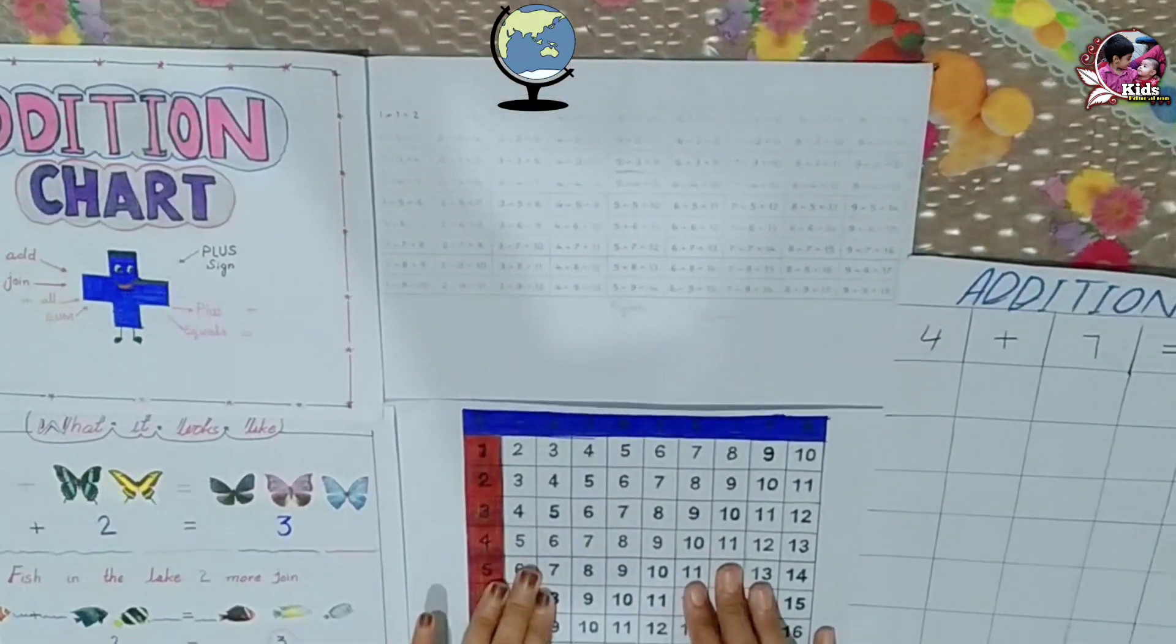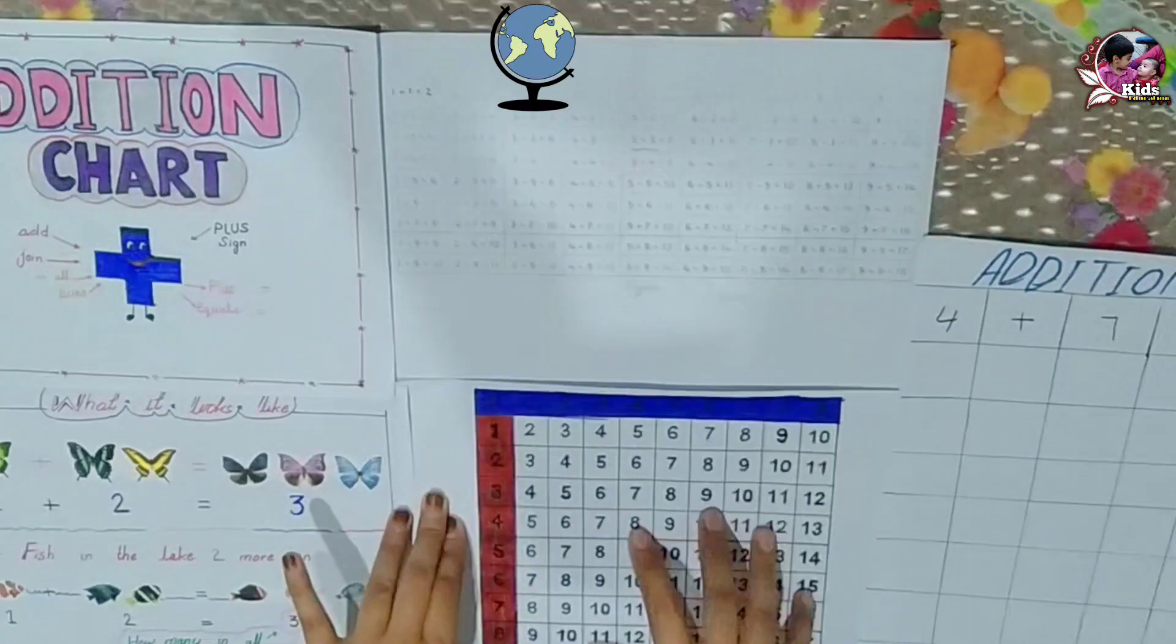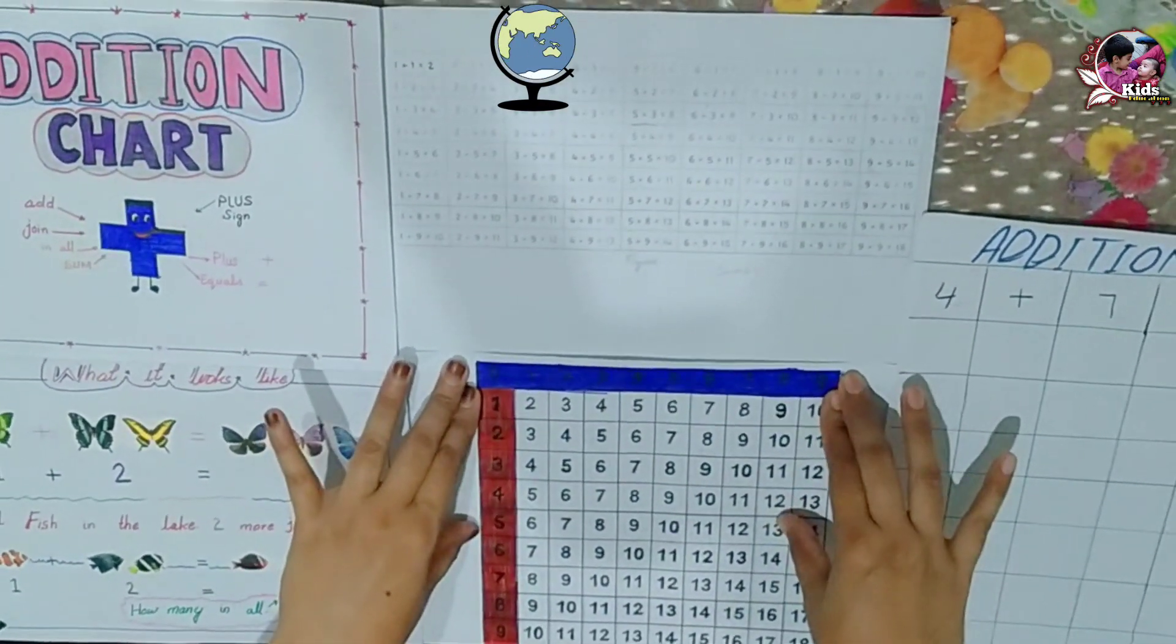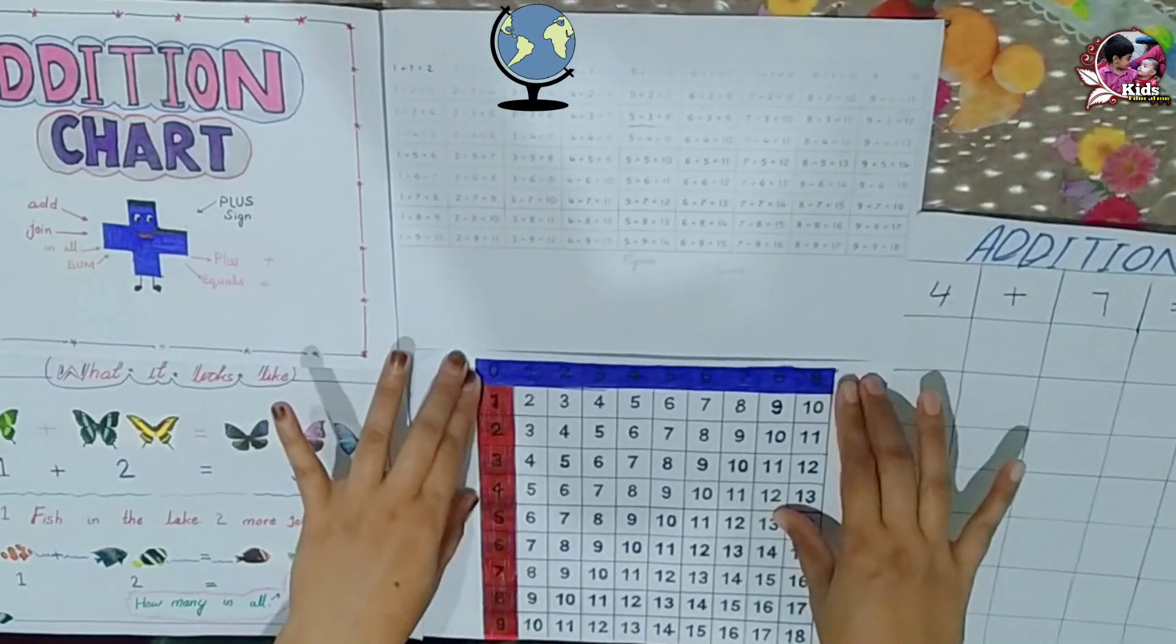This is the addition chart. The addition chart contains a horizontal line in blue color which contains numbers 0 to 9.